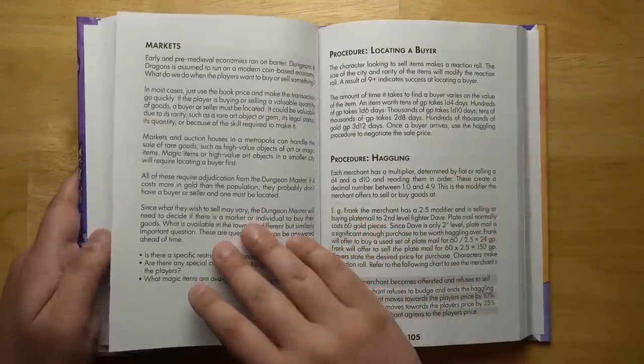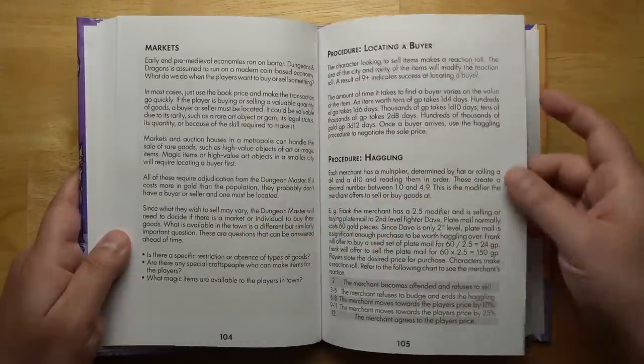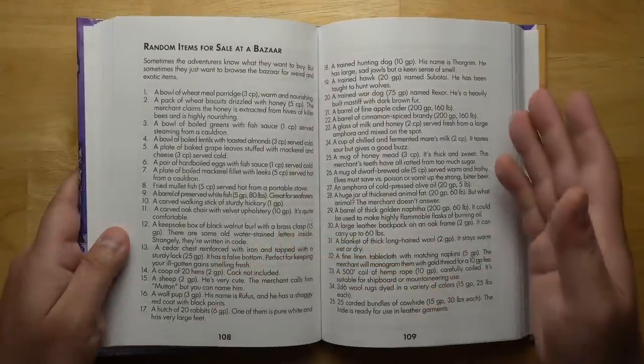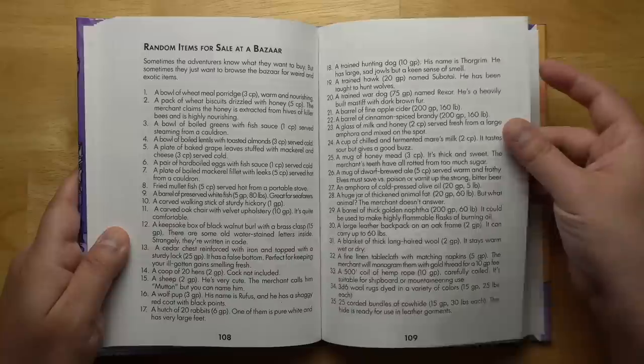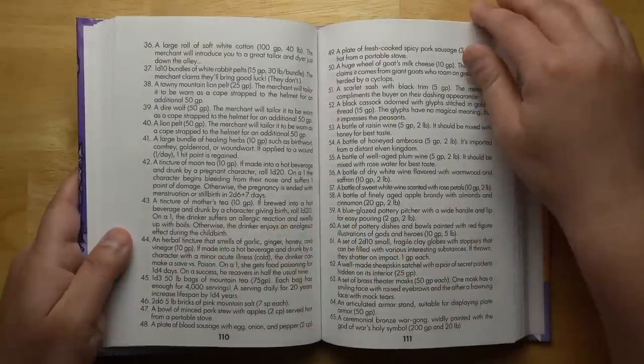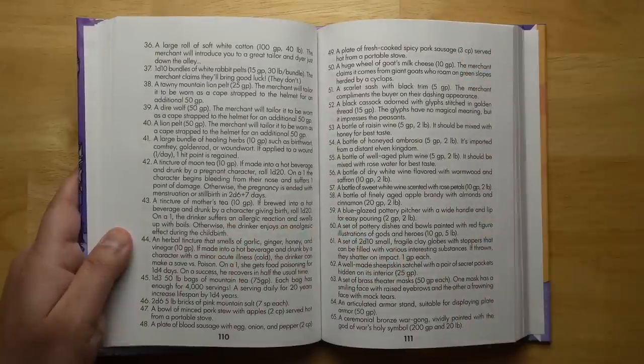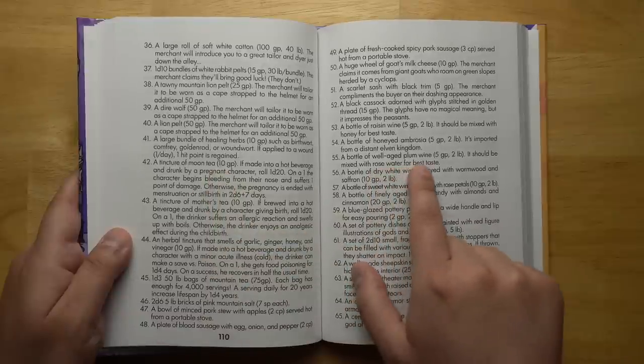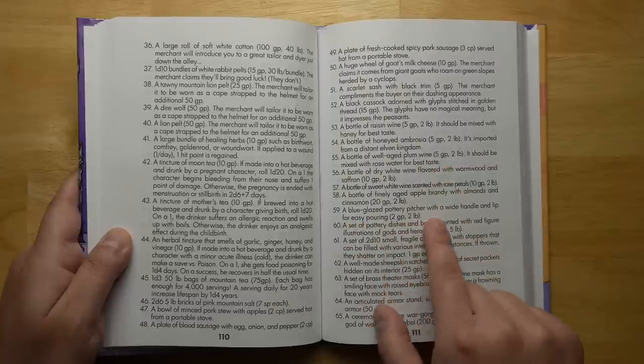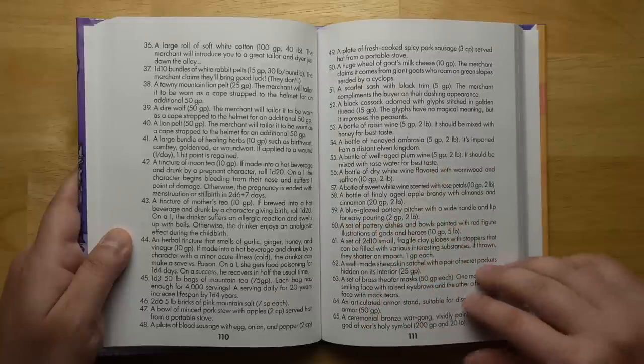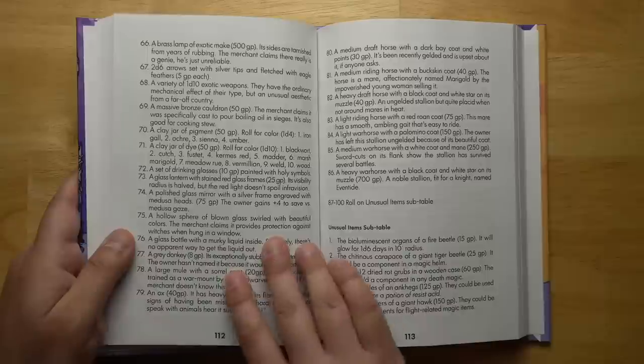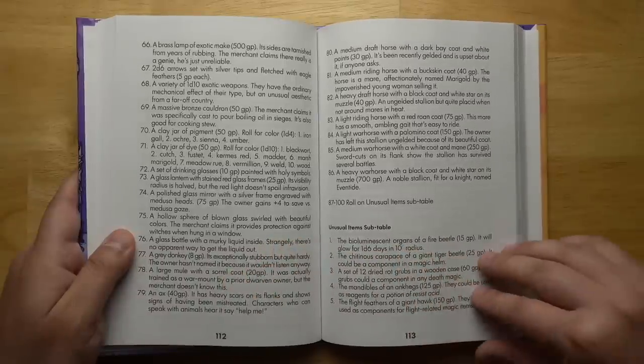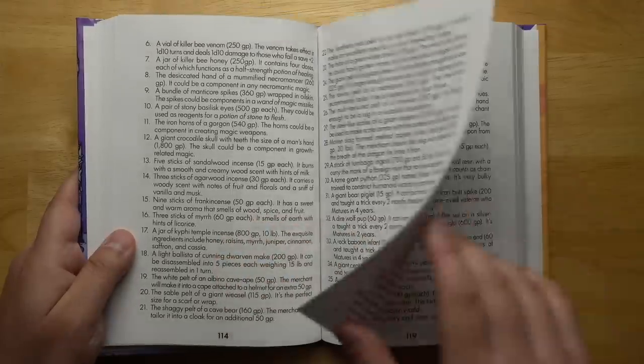We have a section on wealth and prosperity, including running markets, haggling, investments, lifestyle, clan hordes, and random items for sale at a bazaar. This is really great stuff if you want weird items to throw at players when they're digging around in a marketplace. For example, a lion pelt, a tincture of moon tea, a bottle of well-aged plum wine, a blue glazed pottery pitcher. And there's some unusual items like the bioluminescent organs of a fire beetle, probably something that you could use in a potion.